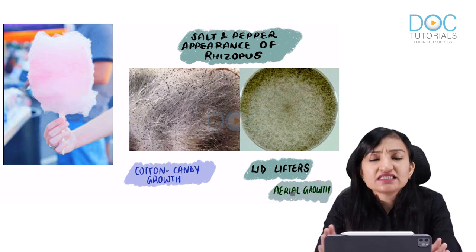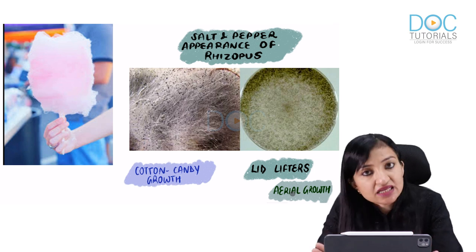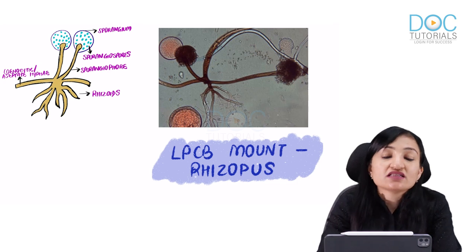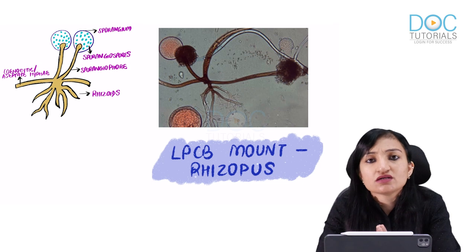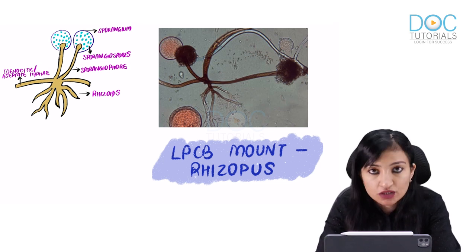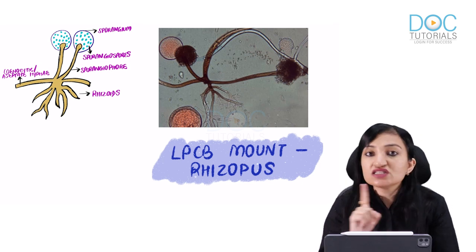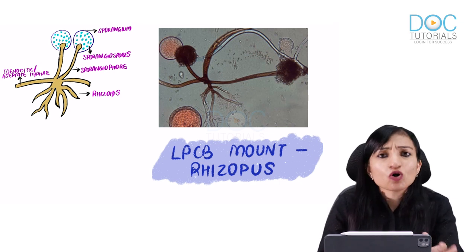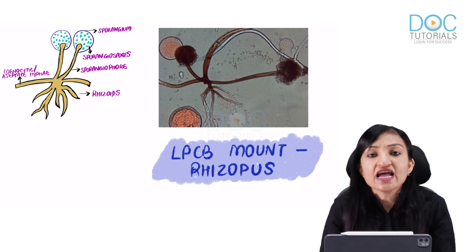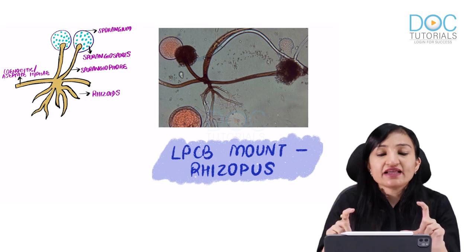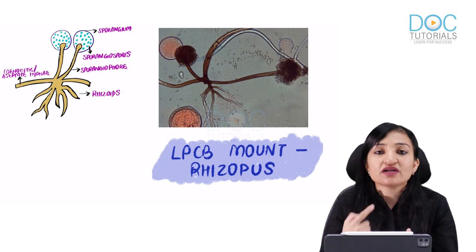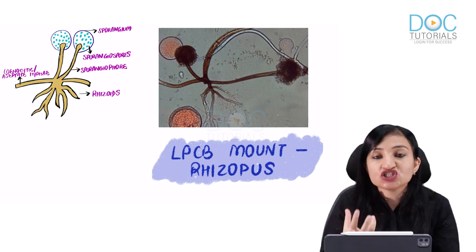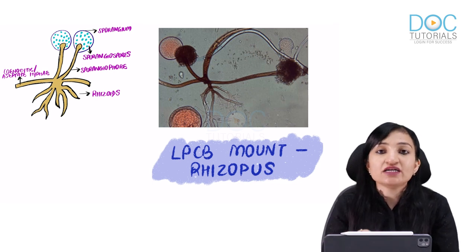Once culture growth is obtained, proceed with LPCB (Lactophenol Cotton Blue) mount to identify the specific type of fungus. Remember, LPCB mount is never done directly with the patient's specimen — only from culture growth. Microscopic examination tells you the morphology (broad, irregular, aseptate hyphae), but not whether it is Mucor, Rhizopus, or another genus. Culture followed by LPCB is needed for specific identification.